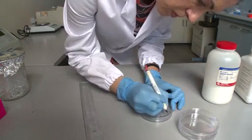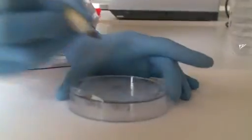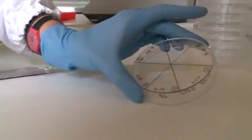Create six sections on the bottom of the petri dishes and label with replicate number and dilution factor.